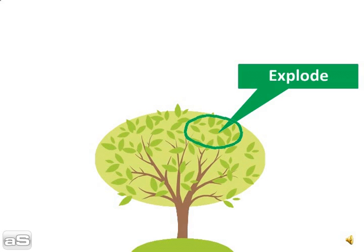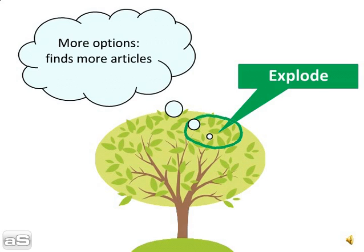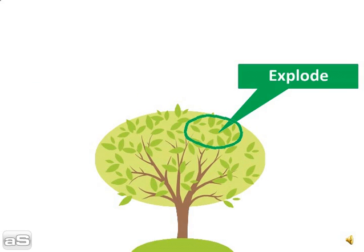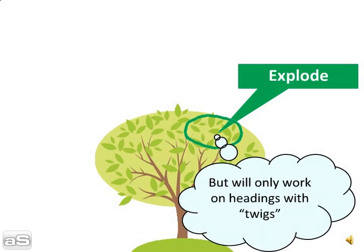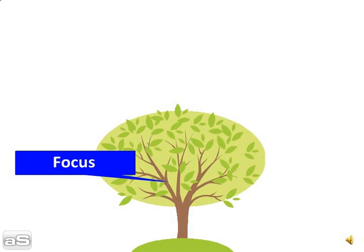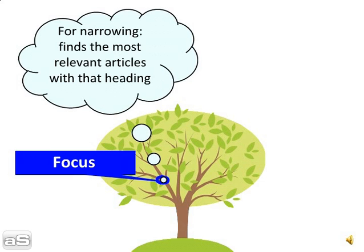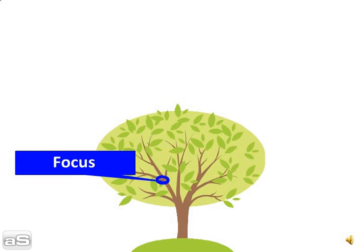So, explode finds more options and more articles, but it will only work with headings that have twigs. Focus is for narrowing and finds only the most relevant articles with that heading, but it does find fewer articles, so use with caution.